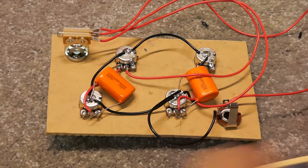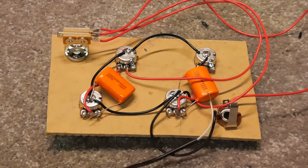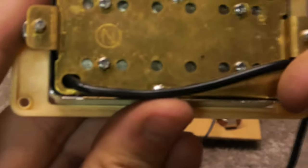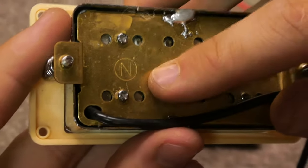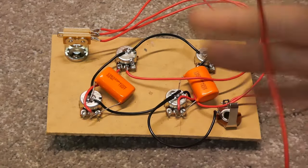All right, now what we're going to do is, we're going to put in our pickups. So, you want to find out which one is your bridge and neck. Most of the time on the back of them, it says B or N. So, this one says N, so that's my neck pickup. And this one's our bridge pickup, because it says B on it.